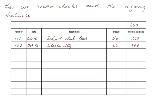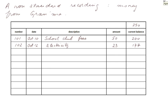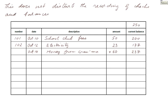Now let's come to a non-standard recording. Suppose that on October 14th we receive a check from grandma for Christmas money — 60 euros. We write 60 here, but of course it's not something to be subtracted but to be added this time. This is not exactly what our checkbook booklet is designed for, but there is no problem.